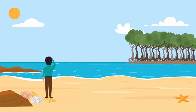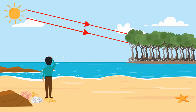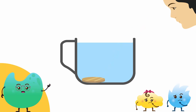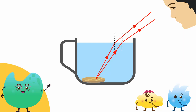We see objects only if light hits them and the rays reflect or refract off them and reach our eyes. In our experiment, the rays of light hit the coin and bounce to our eyes after refraction. When light rays travel from a dense medium to a rare medium — that is, from water to air — they are refracted away from the normal at the surface of water. These refracted light rays enter our eyes and create the illusion that the coin at the bottom of the cup is closer to us than it really is.